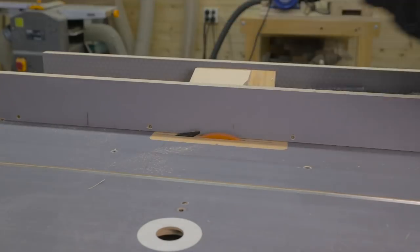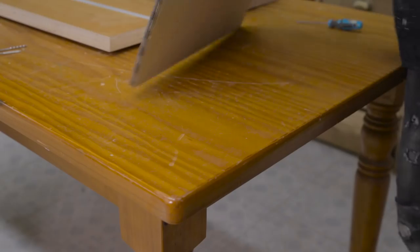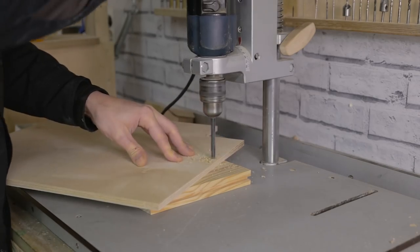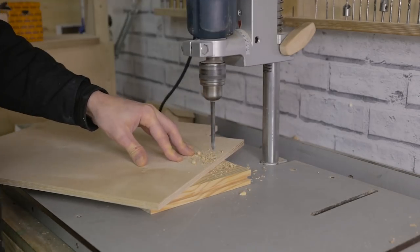With the table saw, I make a slot for the hinge. I screw the hinge onto the door and, after checking the measurements, I screw the door to the saw.